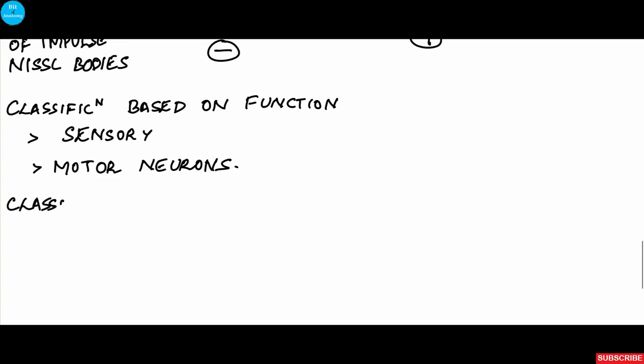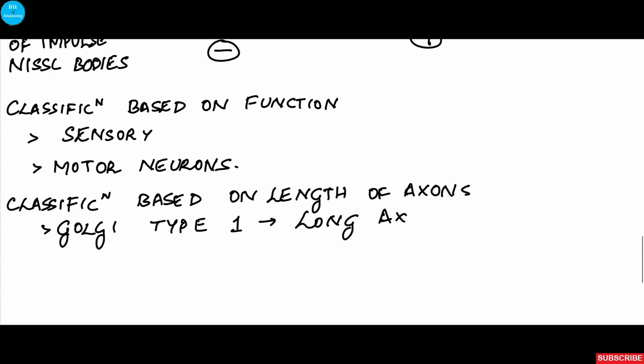There is classification based on the length of the axon. Golgi type 1 neurons have long axons, such as the pyramidal tract or corticospinal fibers. Golgi type 2 neurons have short axons, usually the interneurons which communicate between sensory and motor neurons.